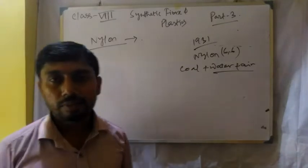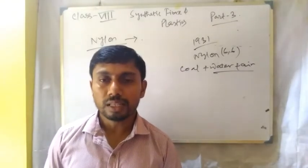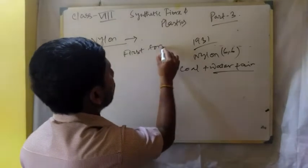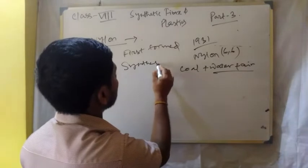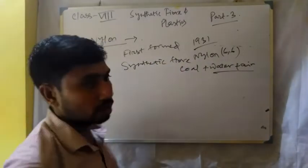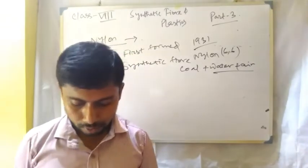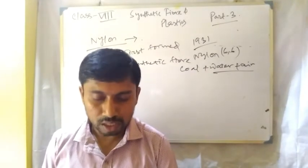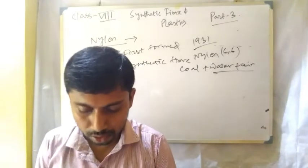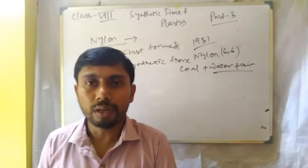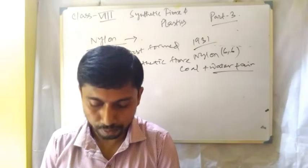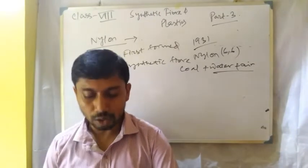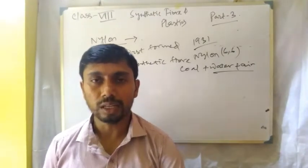Nylon is a fully synthetic fiber — it is the first fully synthetic fiber ever discovered. We may write down the definition: nylon is made up of repeating units of a chemical called amide. So nylon is a polyamide.